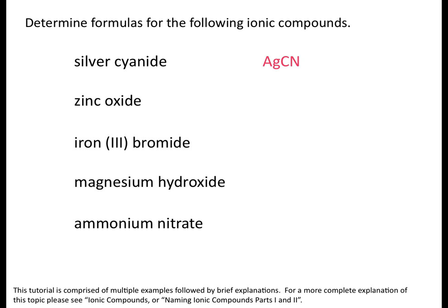Zinc oxide: zinc is a transition metal but typically forms ions with a charge of plus two, so you don't normally see a Roman numeral for zinc. Oxide tells us the anion is oxygen. Zinc is plus two and oxygen is minus two, so those charges cancel and the formula is ZnO.